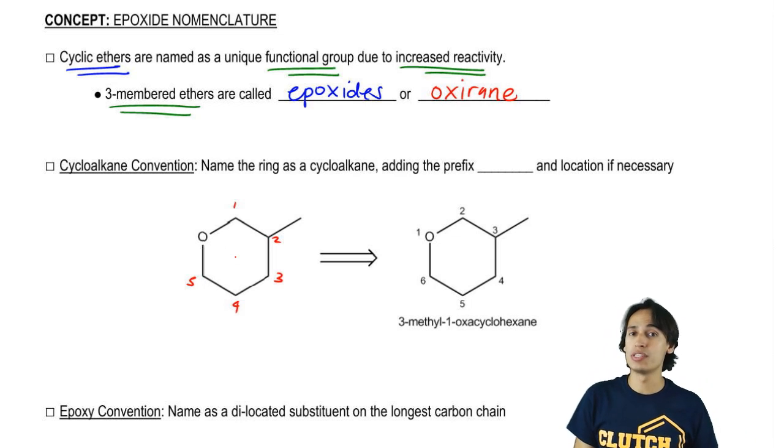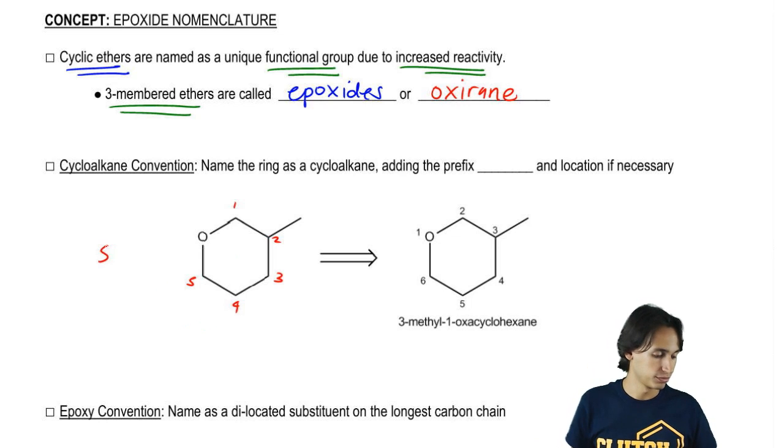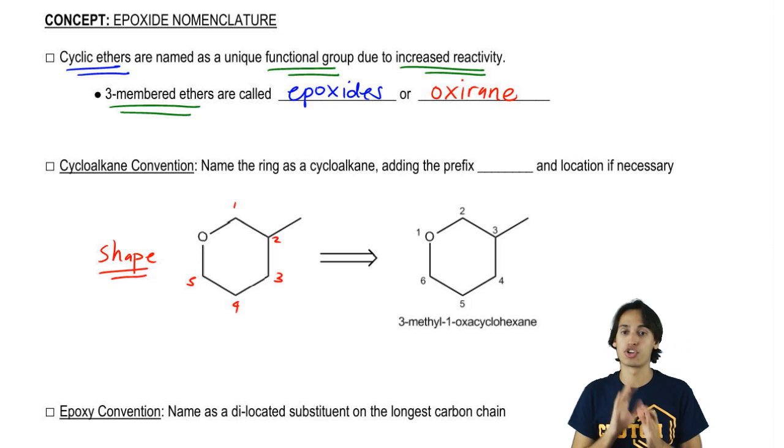So I have five carbons, but what I'm telling you is that we should actually name it as a cycloalkane, not by the number of carbons. So that means usually when we're naming an alkane, we would say there's five carbons, so this would be cyclopentane. But it's not. We're going to call this actually cyclohexane because we go by the shape. What we're worried about here is the shape of the molecule, not how many carbons it has in it.